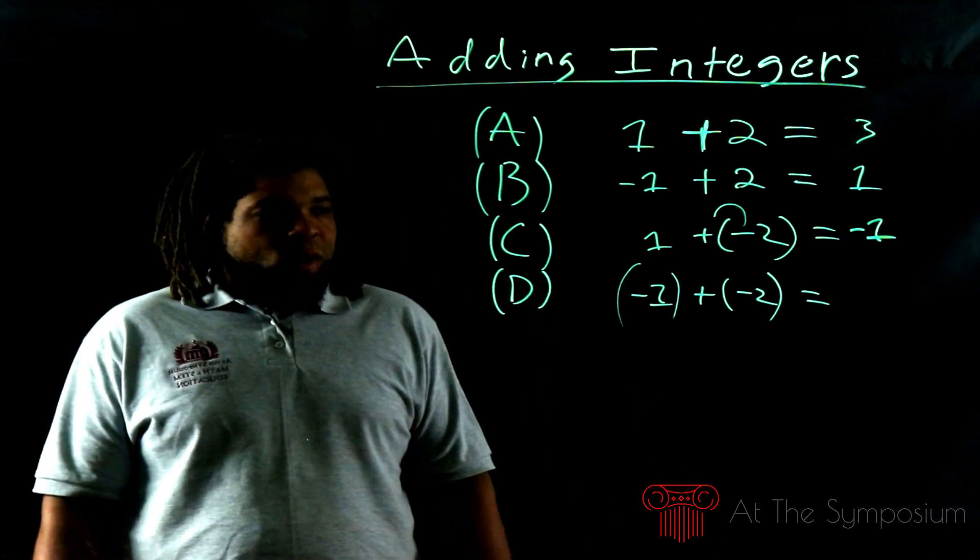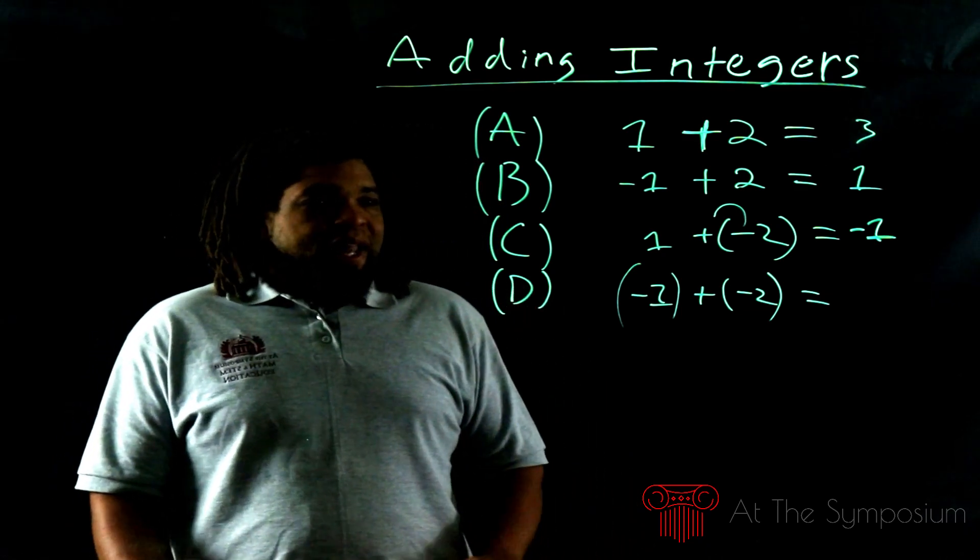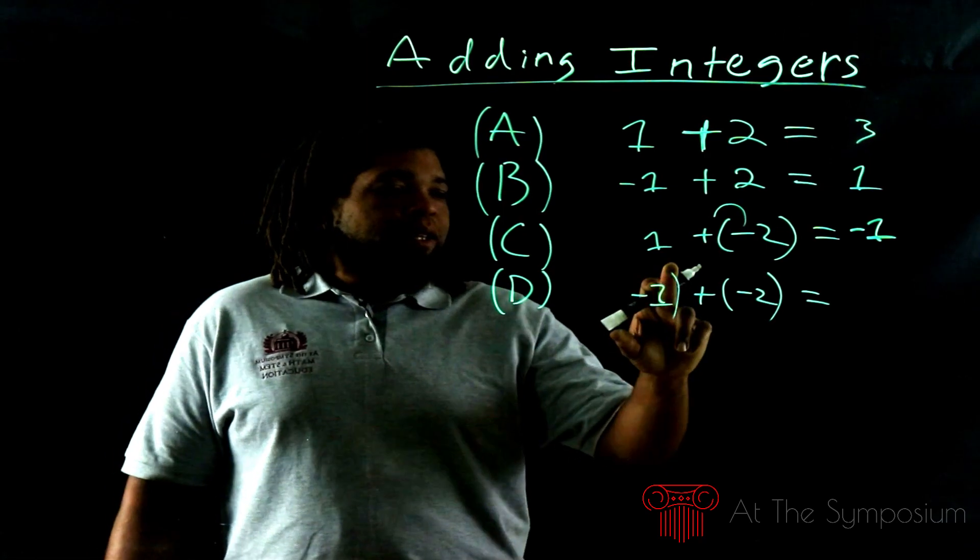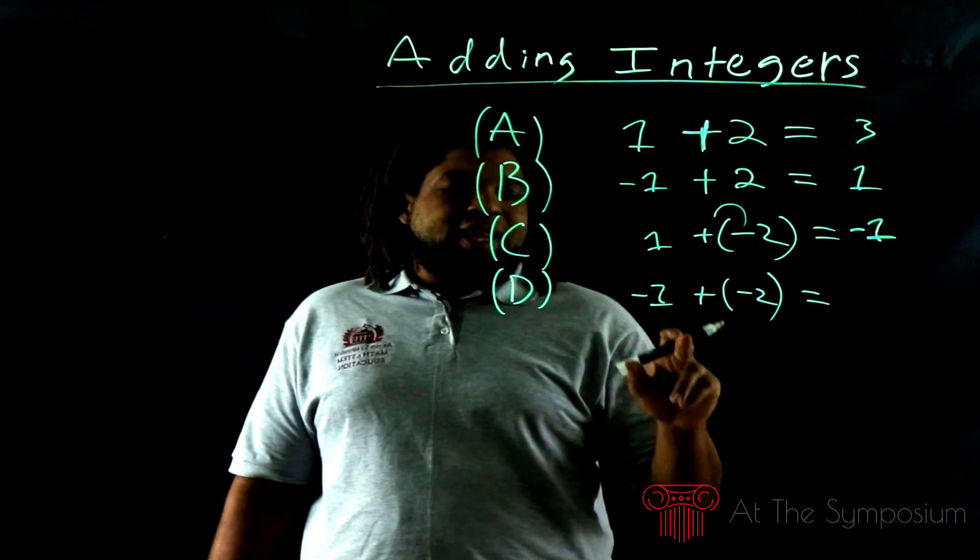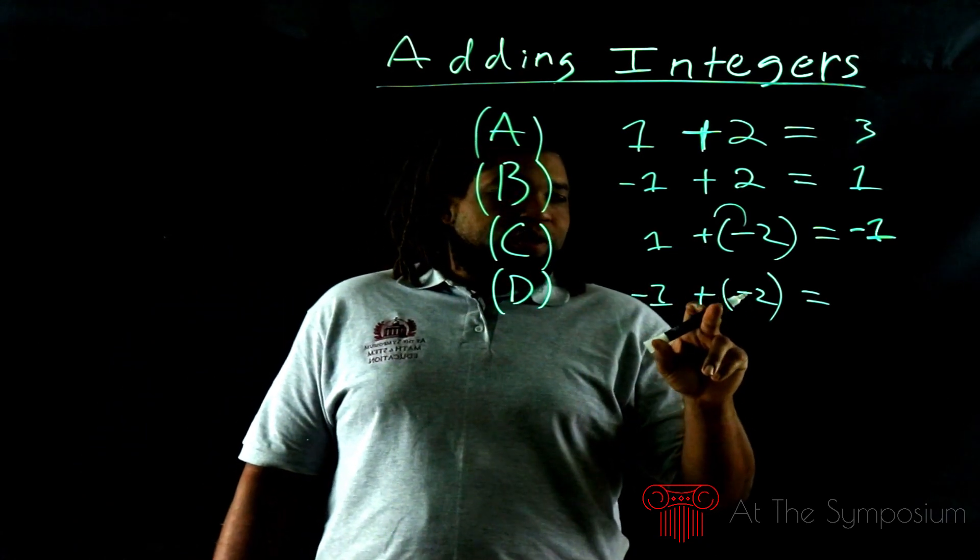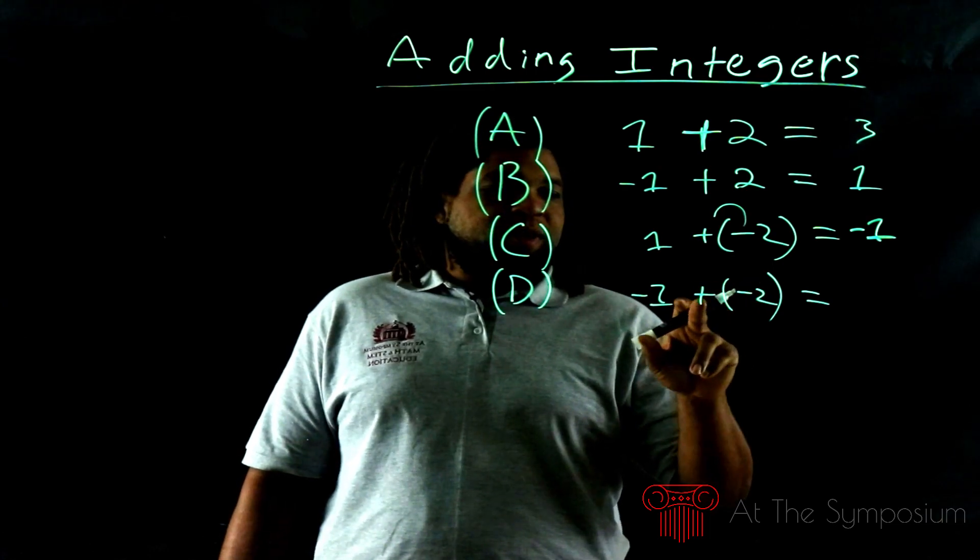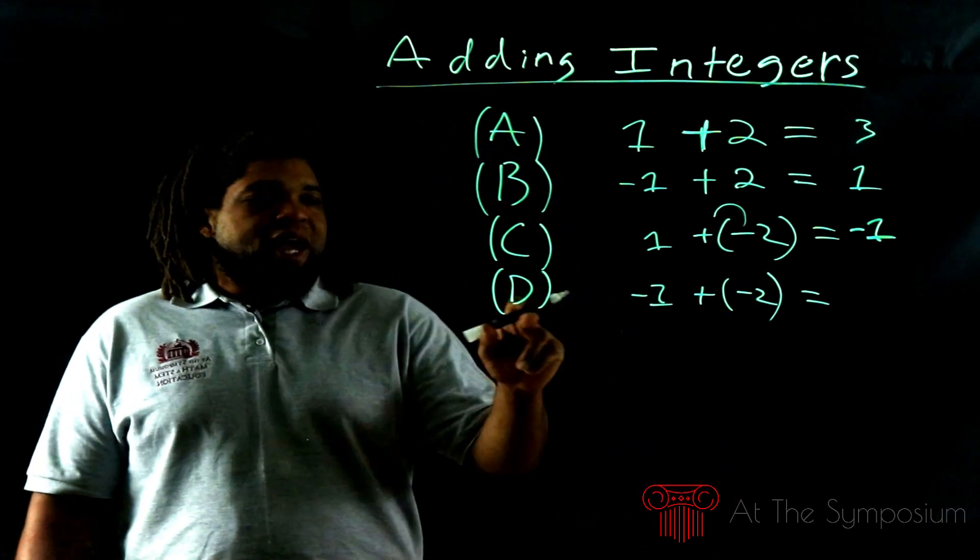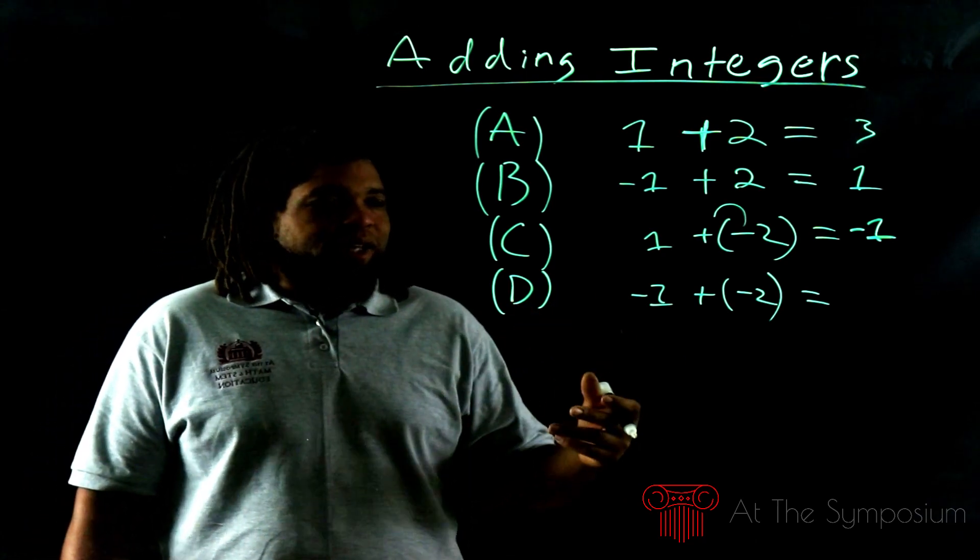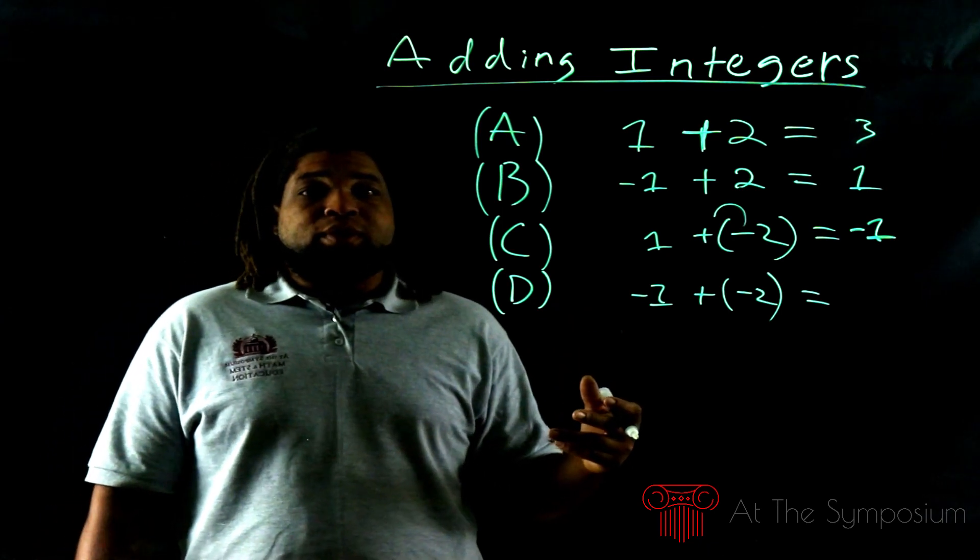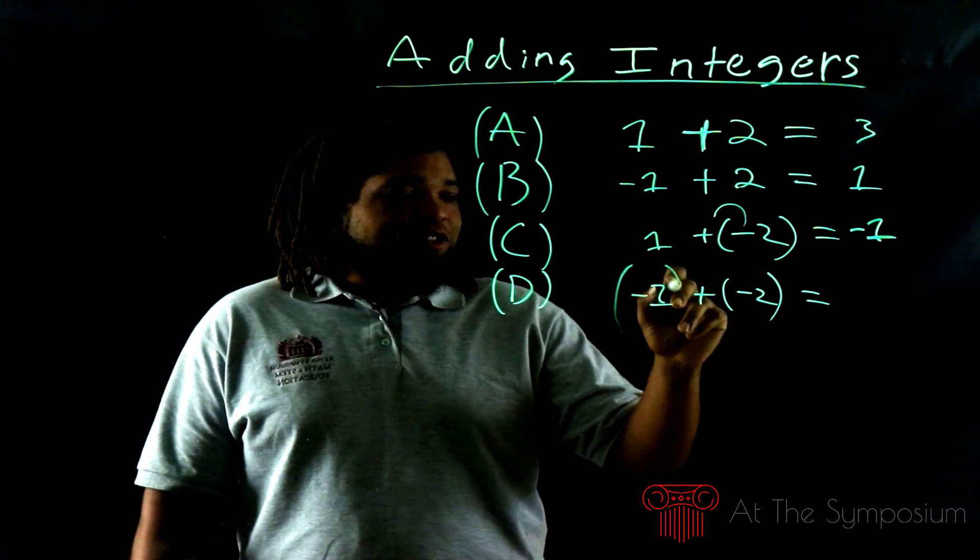D, we have -1 + (-2). Now this doesn't have to be written like this. You might see it like that. And of course, like I said in the last example, this one is typically going to have the parentheses because there's two signs there, but I'll show you why I had those parentheses there. The reason I had those parentheses there is because it illustrates to us very clearly how to deal with this kind of problem.